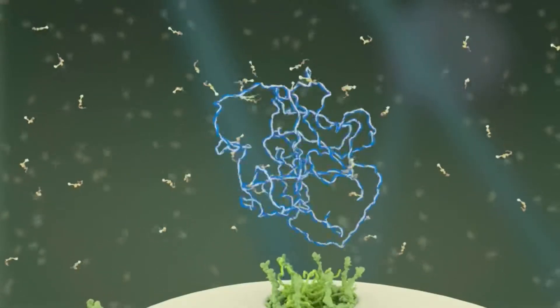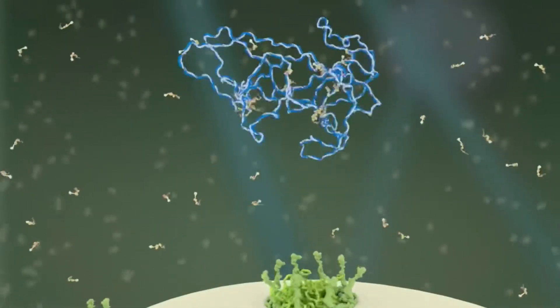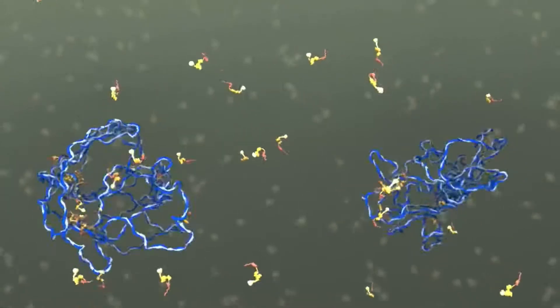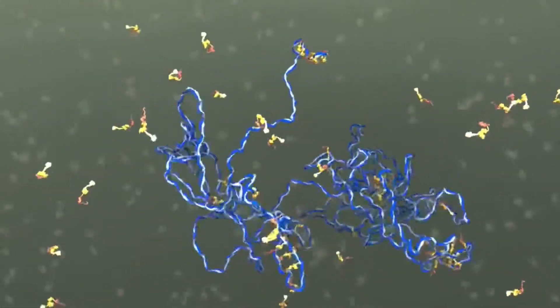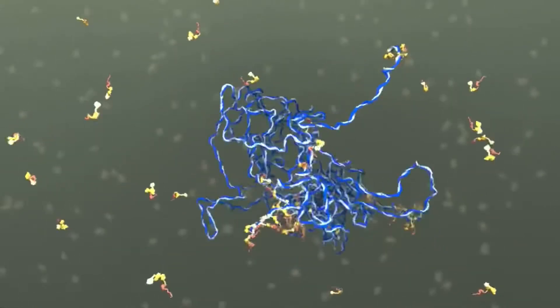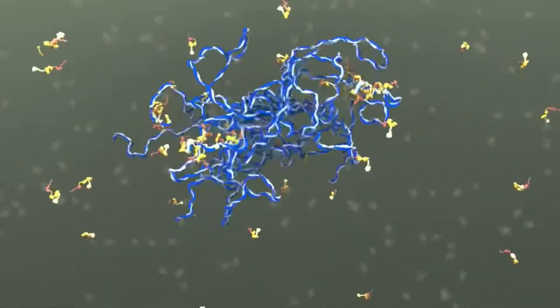Other viral RNAs are destined for packaging into new viruses. These RNAs attract GAG protein along their journey to the cell membrane. Along the way, two copies of viral RNA bind together, forming a stable, dimerized RNA structure.